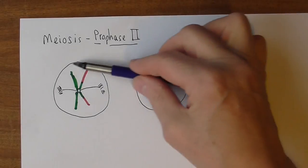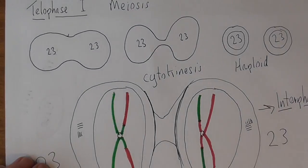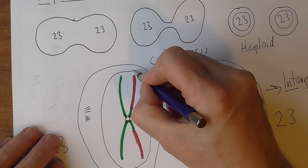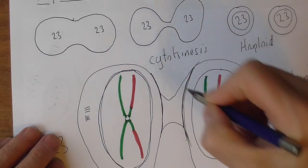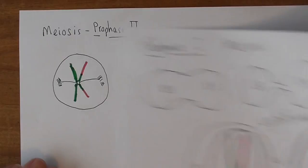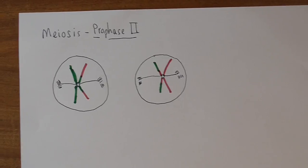And again the nuclear envelope. I haven't drawn it here but the nuclear envelope which was present, remember the nuclear envelope was present, it redeveloped here at the end of telophase 1. That nuclear envelope again is going to go. So that's prophase 2.